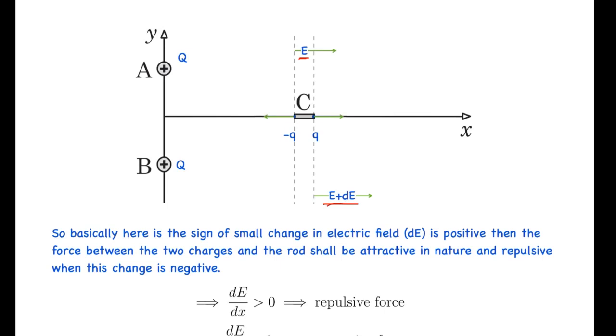So basically, if the sign of small changes in electric field dE is positive, then the force between the two charges and the rod shall be attractive in nature, and repulsive when this change is negative. This can be seen simply as the net force will be q times dE and its direction can be determined.